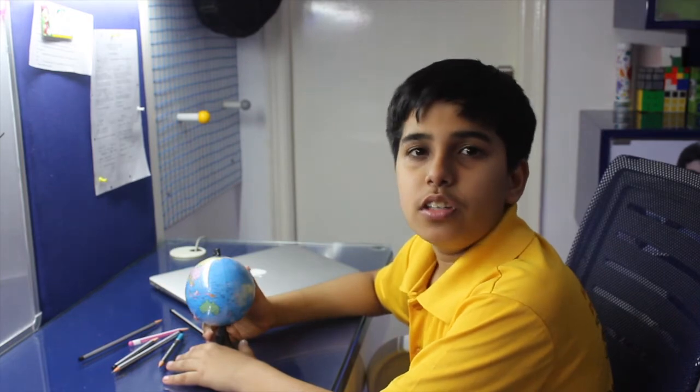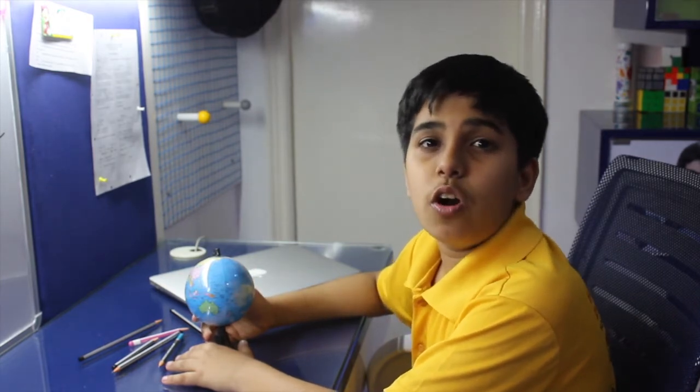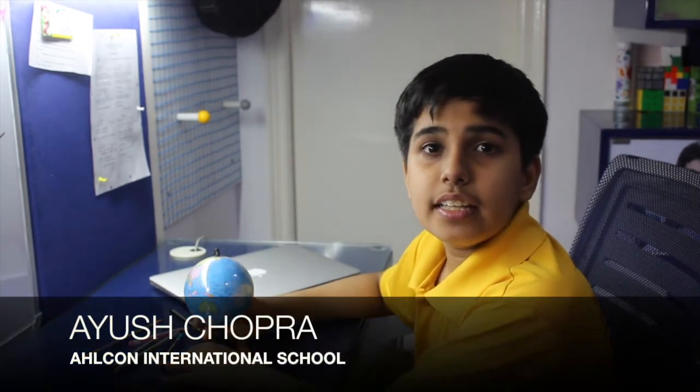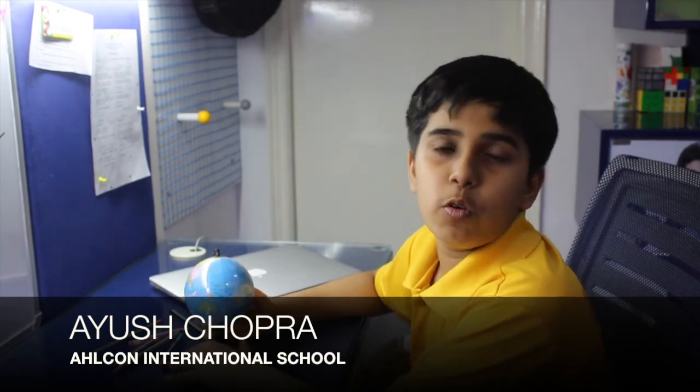Our planet is 75% covered by water. That is why it is called Blue Planet. In this, 98% of water is salty and only 2% of water is available for drinking purposes.